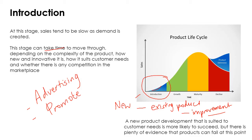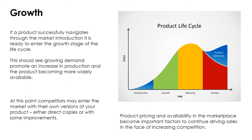Quite often products fail at this stage — this is where things go really wrong and your product never quite takes off. That's why some companies are quite worried about producing a completely new product; what they tend to do is take an existing product and make an improvement to it, which can be a safer approach. Sales might be relatively slow because customers need to see how it meets their needs and whether there is competition in the marketplace.